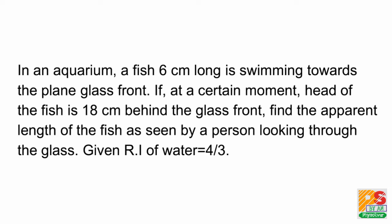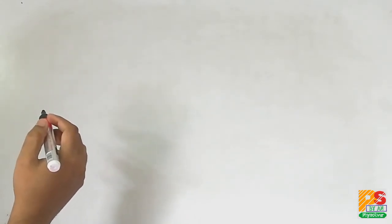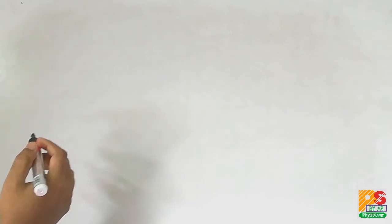Hello students. The question is: In an aquarium, a fish 6 cm long is swimming towards the plain glass front. If at a certain moment the head of the fish is 18 cm behind the glass front, we have to find the apparent length of the fish as seen by a person looking through the glass front. The refractive index of water is given as 4/3. Let's draw the figure first.